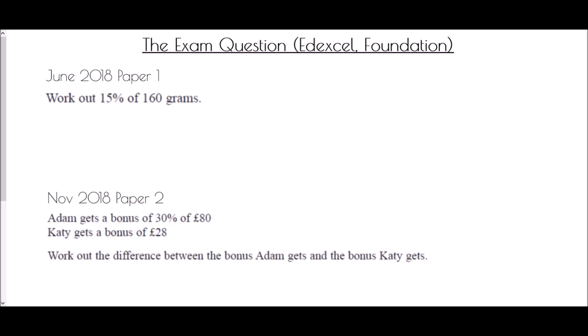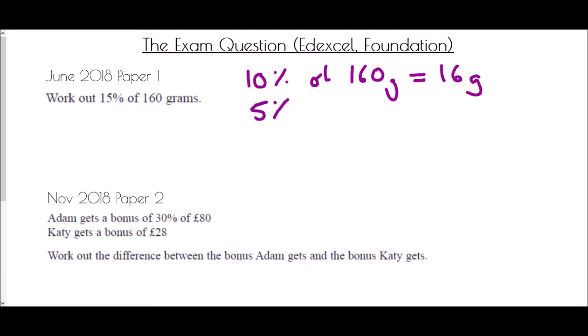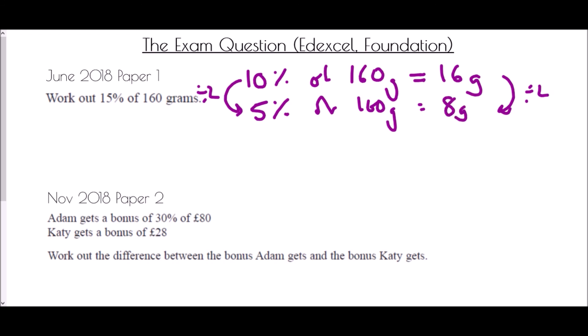Now exam questions from Edexcel Foundation papers. The non-calculator question: find 15% of 160 grams. Start with 10% of 160 = 16 grams. Then find 5% by halving: 16 ÷ 2 = 8 grams. Adding 10% + 5%: 16 + 8 = 24 grams.